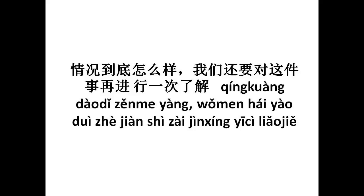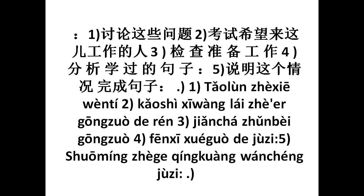Moving on to the third exercise. Using Chin Shing, we have to rewrite the following as in the example. Let us look at the first example. Liao Chihye means to understand; Che Chian Shih means this matter. Chin Kuang Tauti Zama Pan, Vaman Haiyao, Doi Che Chian Shihye, Zai Chin Shing, Yisi Liao Chihye. After all, what is the situation? We still need to understand — we have to carry on our understanding. So we use Chin Shing to combine Liao Chihye and Che Chian Shihye.